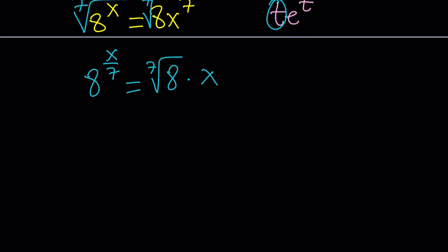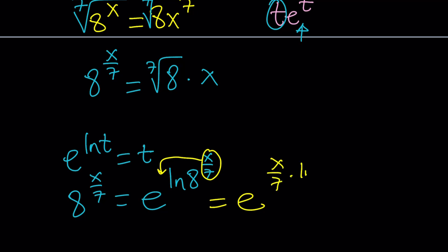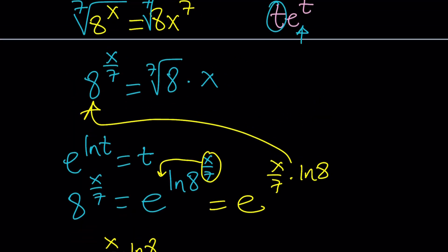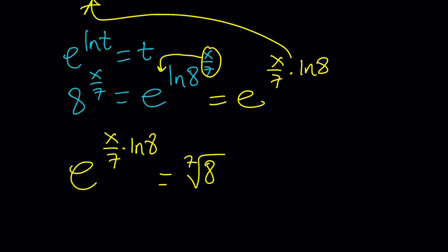But we have 8 to the power x over 7. I do need e to the power something. So I'm going to use the famous identity e to the power ln t equals t. So I can write 8 to the power x over 7 as e to the power ln 8 to the power x over 7. But of course this x over 7 can be moved to the power x over 7 times ln 8. So e to the power x over 7 times ln 8 equals the 7th root of 8 times x.